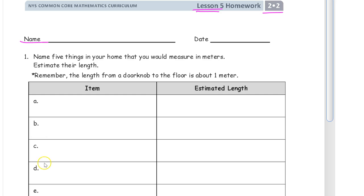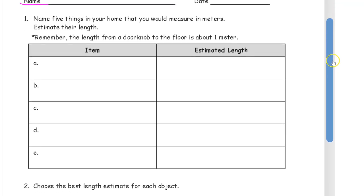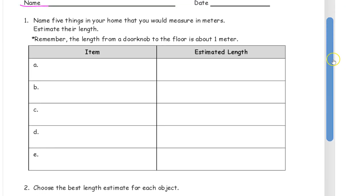On this first page we are naming things in your home that you would measure in meters and we're just making estimates. We're not measuring them, we're just making estimates. Keep in mind that a meter is about the length from a doorknob down to the floor. So that's one meter. You want to measure things that are at least that long.